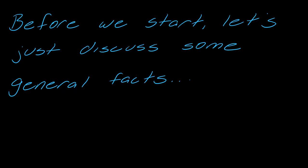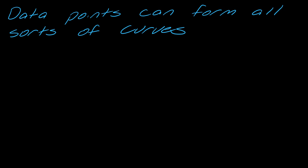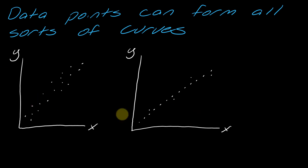Now before we start let's just discuss some general facts. So data points can form all sorts of curves. You could have data that looks like these two situations and when you look at these, this data looks a little bit more like a line than this data but you can still definitely visualize a good line that would kind of go through the center of both of these data sets, right?